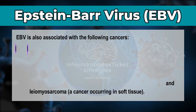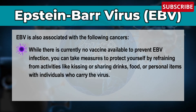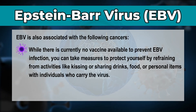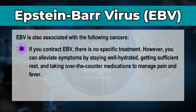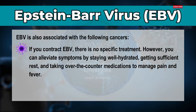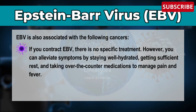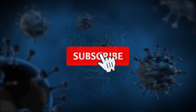While there is currently no vaccine available to prevent Epstein-Barr virus infection, you can take measures to protect yourself by refraining from activities like kissing or sharing drinks, food, or personal items with individuals who carry the virus. If you contract Epstein-Barr virus, there is no specific treatment; however, you can alleviate symptoms by staying well hydrated, getting sufficient rest, and taking over-the-counter medication to manage pain and fever.